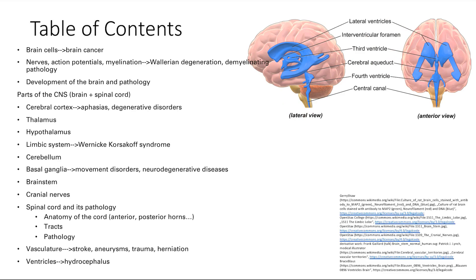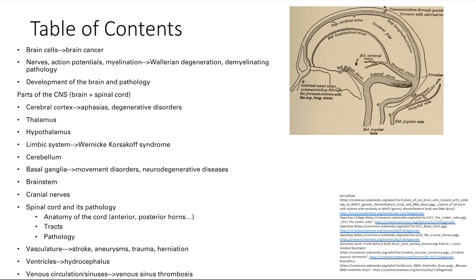Next are the ventricles, which secrete and allow CSF — cerebral spinal fluid — to flow. When that gets blocked up, that becomes something called hydrocephalus. After this, we're going to look at a couple of miscellaneous things associated with the nervous system, including headaches, meningitis, seizures, sleep, neurocutaneous syndromes, ear pathology, and eye pathology.